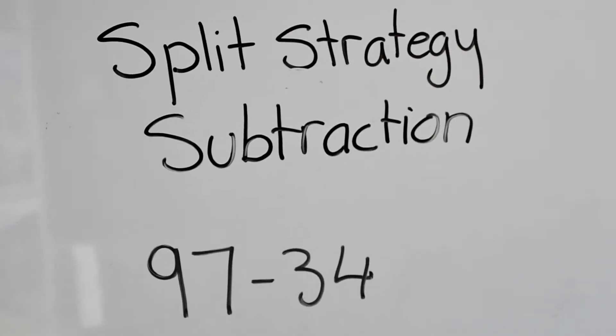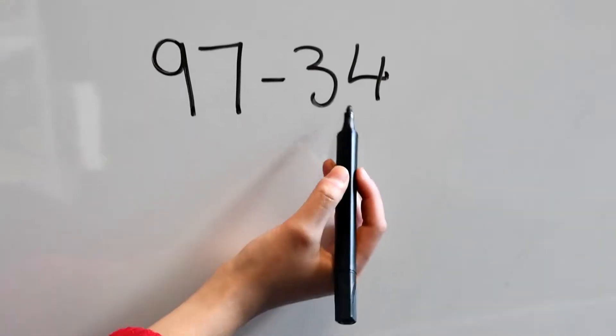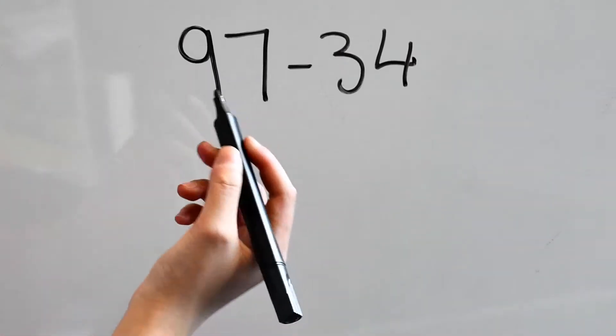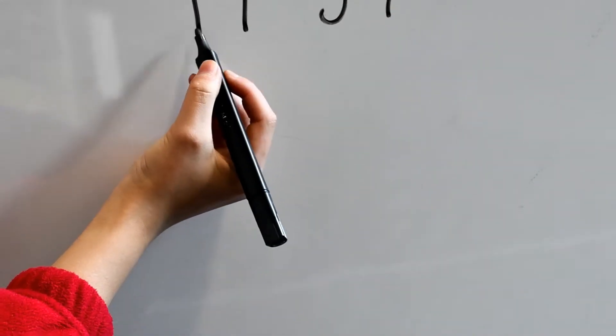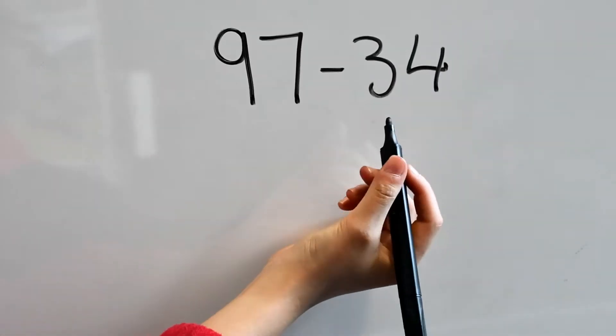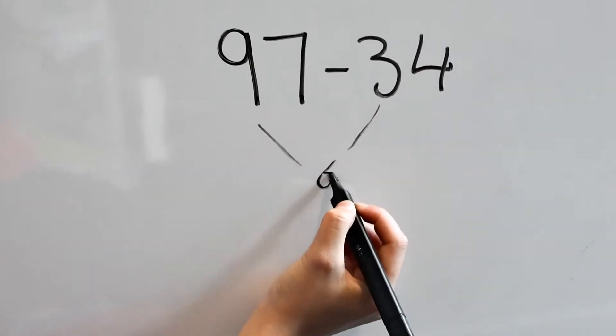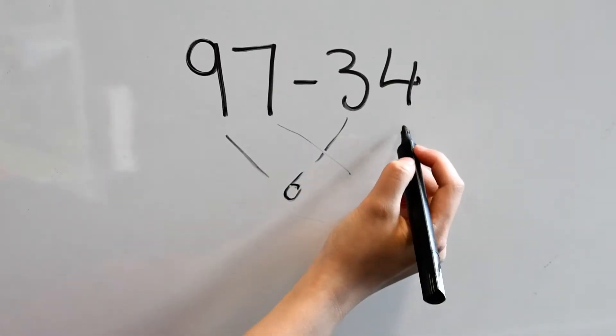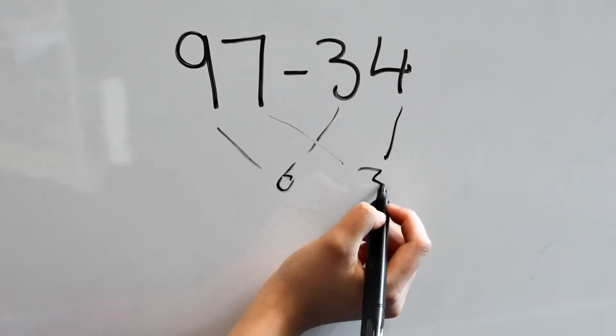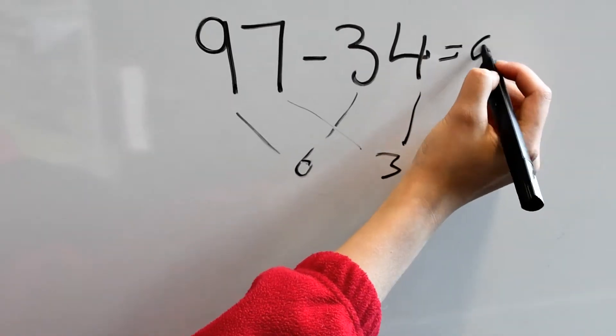This is a split strategy for subtraction. We've got 97 minus 34. You always do the tens first, so we've got 9 tens minus 3 tens, which gives us 6 tens. Then we do the units: 7 minus 4 equals 3, so our answer is 63.